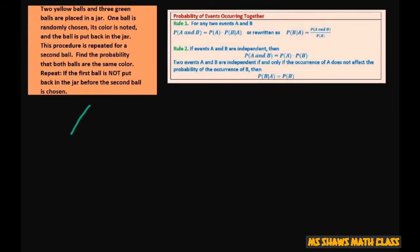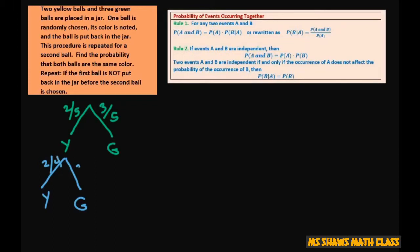The first branches are still two-fifths and three-fifths, just like before. However, we're not putting the ball back, so on the second draw we only have four balls. If yellow was drawn first: two out of four for yellow, three out of four for green. If green was drawn first: three out of four for yellow — actually one out of four, because we already drew a yellow — and two out of four for green.